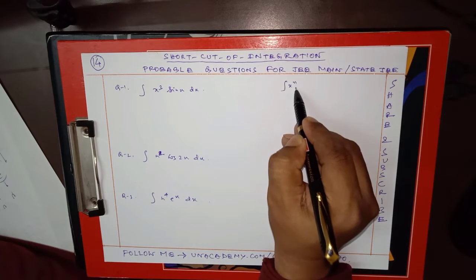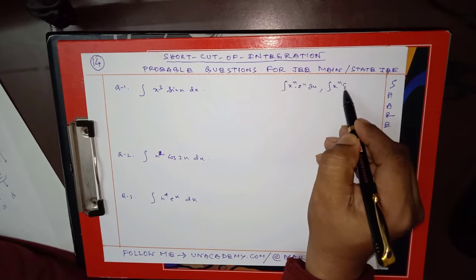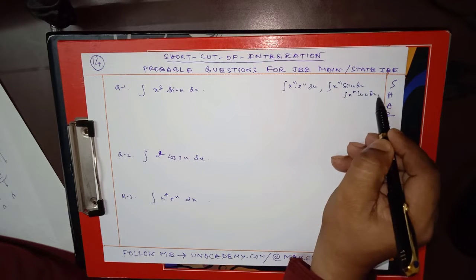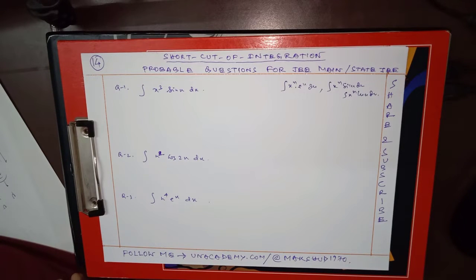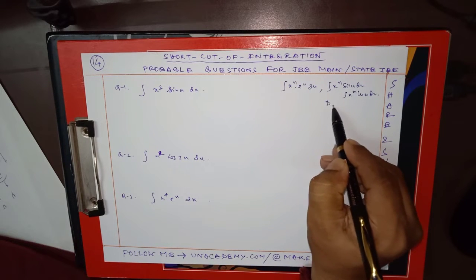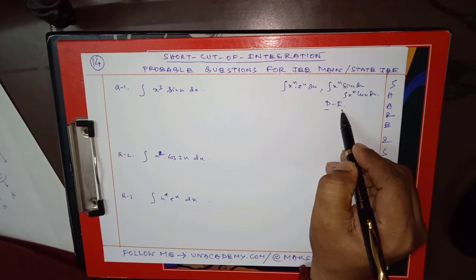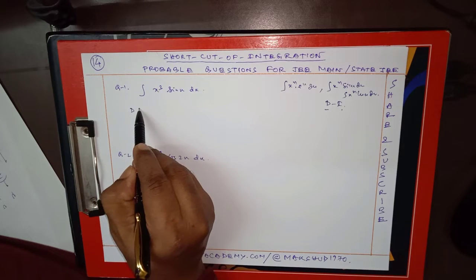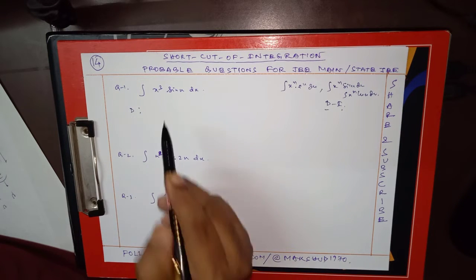So this is ∫x^n sin x dx, ∫x^n cos x dx. At that time you will apply the DI method. DI means D stands for differentiation, I stands for integration. So here the first factor, you will differentiate three times.